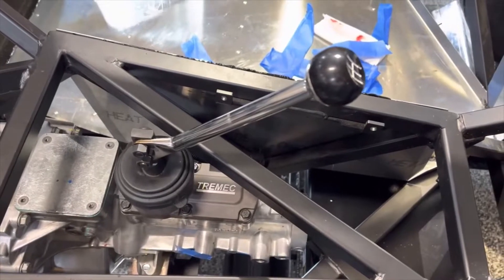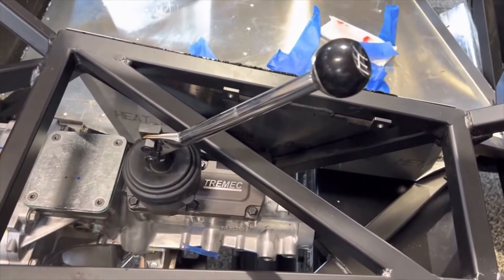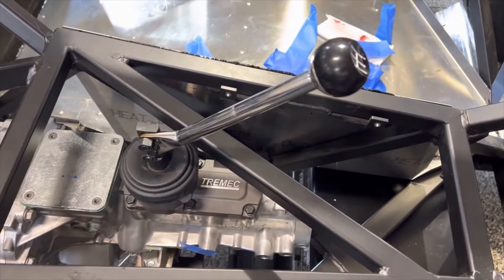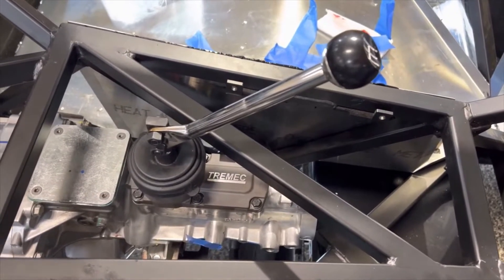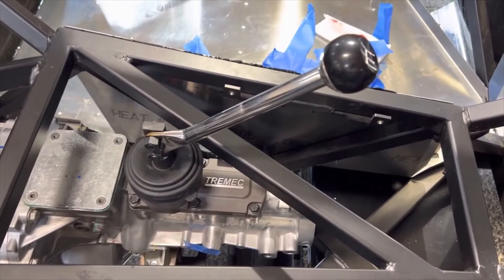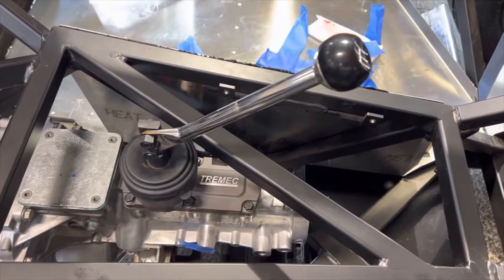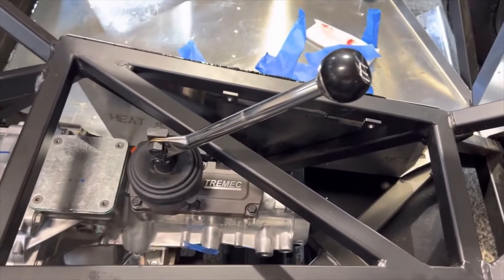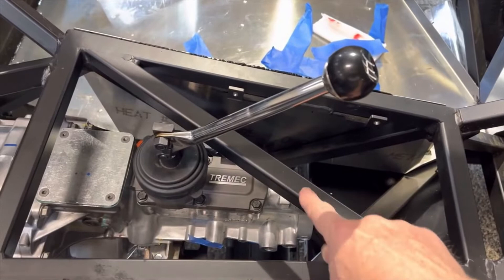Okay, back with the definitive answer. I installed the shifter on the Tremec TKX in the forward position and we are able to get through all of the gears without removing this.